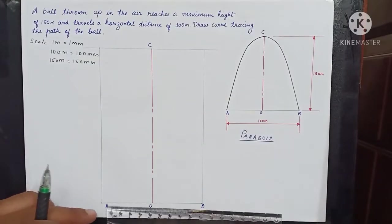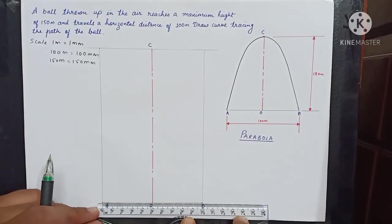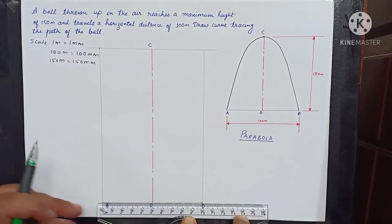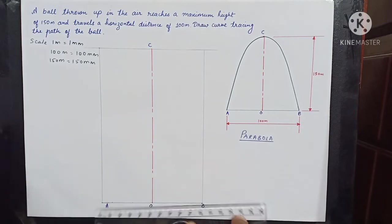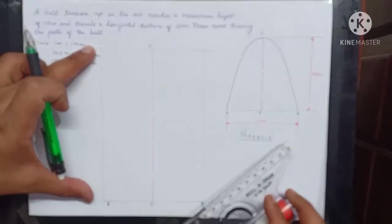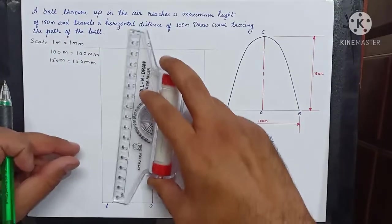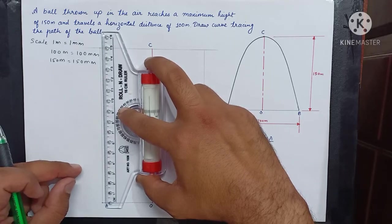Since we can see that the base from A to O is 50 millimeters, we can easily take five equal divisions at every 10 millimeters. The vertical line is 150 millimeters, so we can take five parts at every 30 millimeters.